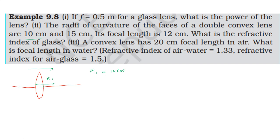The second surface has its center of curvature on the left side, opposite to the incident light direction, so it is measured as negative. Therefore R2 equals minus 15 cm. The focal length of the convex lens is given as 12 cm.